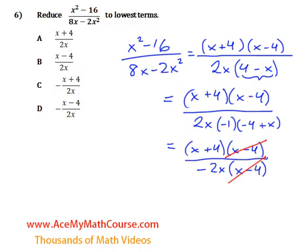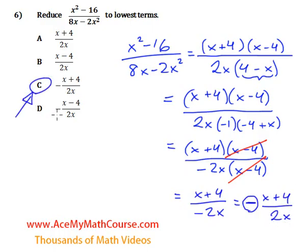So, we're left with x plus 4 over negative 2x, which is equivalent to negative x plus 4 over 2x. So, essentially, I'm just making the whole fraction negative. Negative, and this will be the answer. C, negative x plus 4 over 2x.